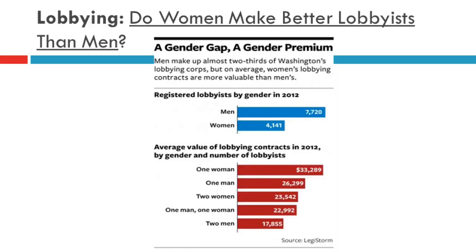If voting doesn't matter, what about the people working on behalf of special interests — because that's where the real power is being wielded? This research examines the gender gap in lobbying in the Washington Lobbying Corps. There are far more men registered as lobbyists in 2012, but they also provide an assessment of how much contracts were worth based on the sex of the lobbyist. The most effective hire for a lobbying firm in D.C. is a woman on her own — a woman alone brings in on average a contract worth over $33,000, compared with one man who brings in on average about $26,000.